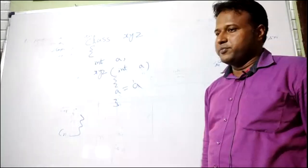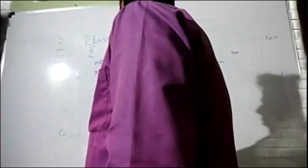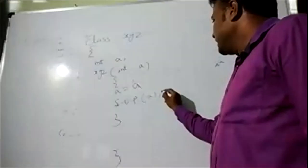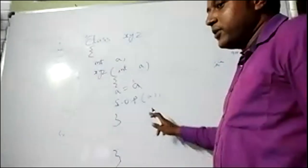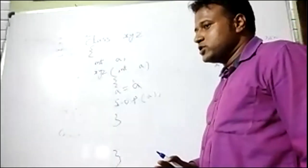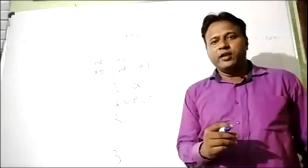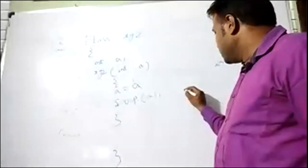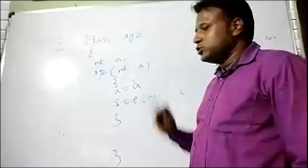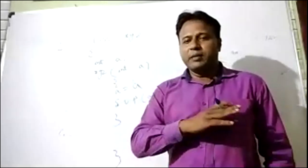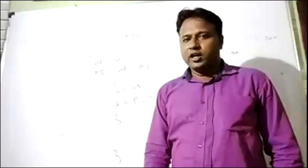When you write a equals to a, there is a problem. The compiler gets confused about which variable is your member variable and which is the parameter variable. If you write system.out.println a, then it shows you the default value. The compiler is confused and the integer default value, which is 0, will be initialized. So a equals to a — which a is your parameter variable, which a is your member variable? The compiler is totally confused.